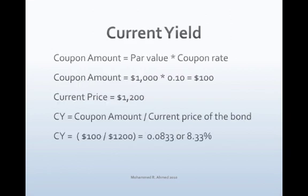To compute the current yield, we need the coupon amount and the current price of the bond. The coupon amount is computed by multiplying the par value by the interest rate. The par value is $1,000 and the interest rate is 10%, so the coupon amount is $100. Current yield equals coupon amount divided by current price: $100 divided by $1,200 equals 8.33%. This means the current rate of return on the bond is 8.33%.